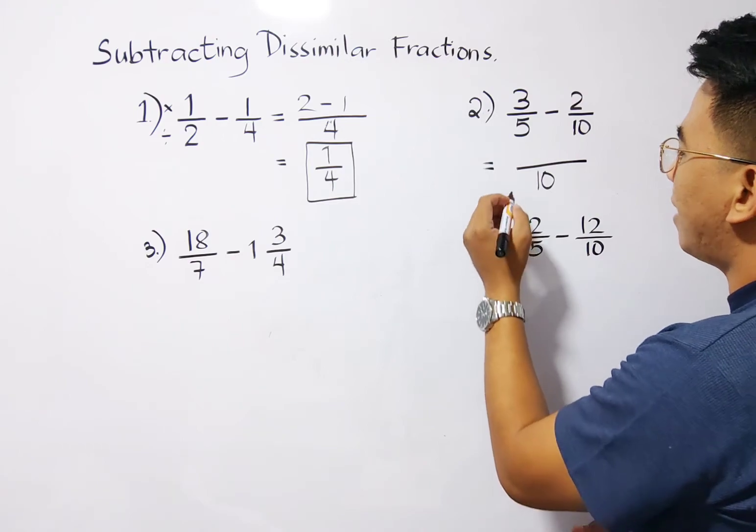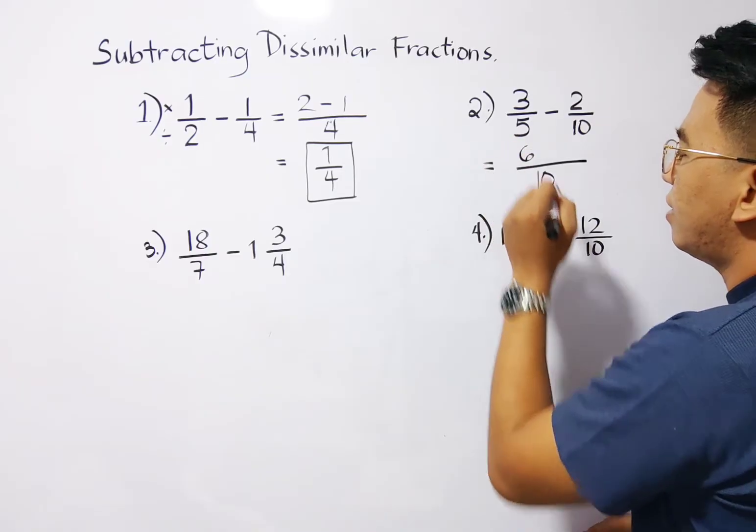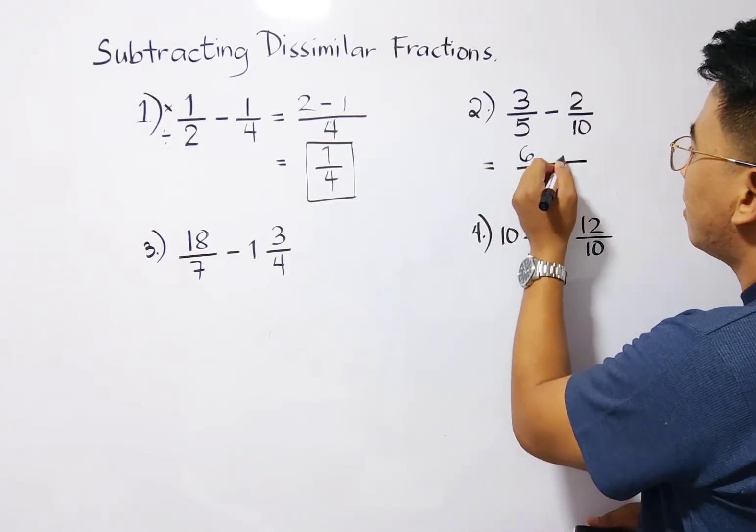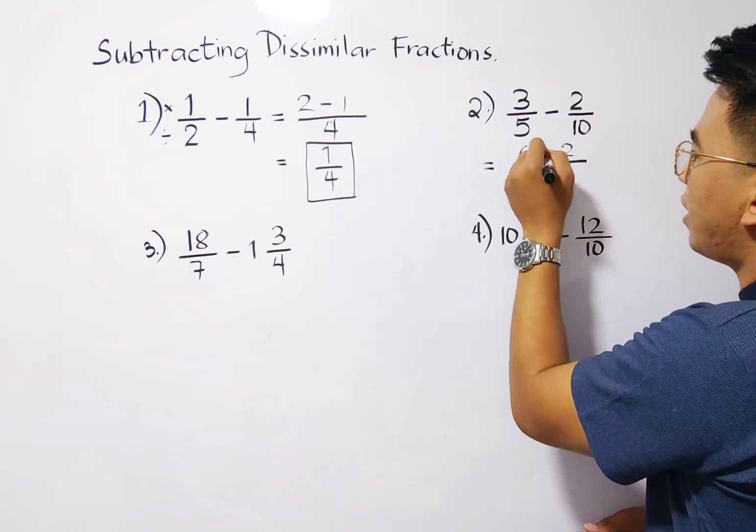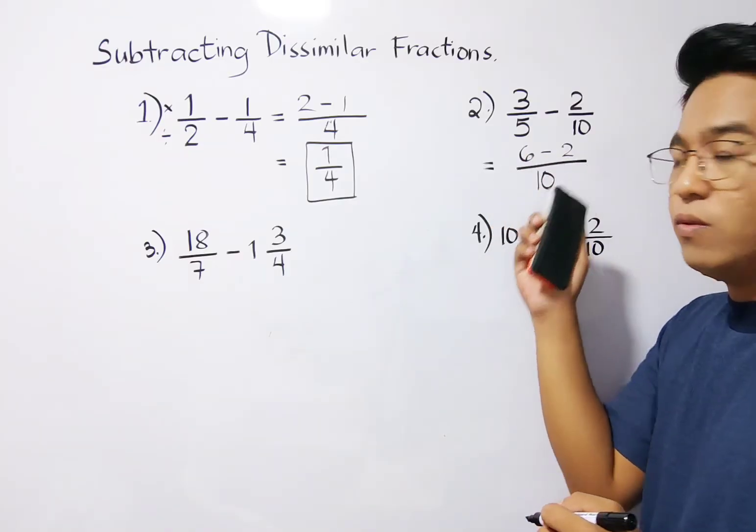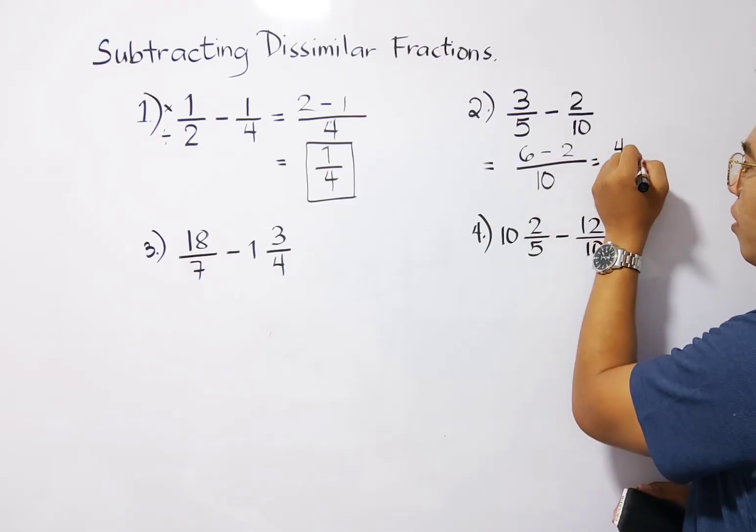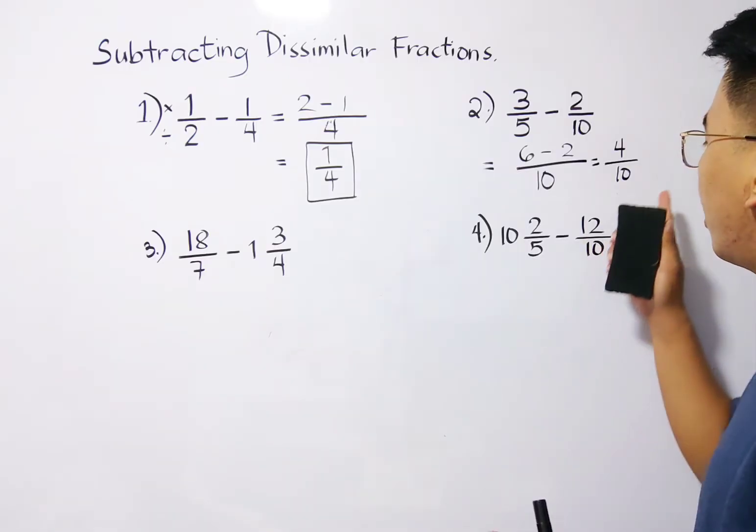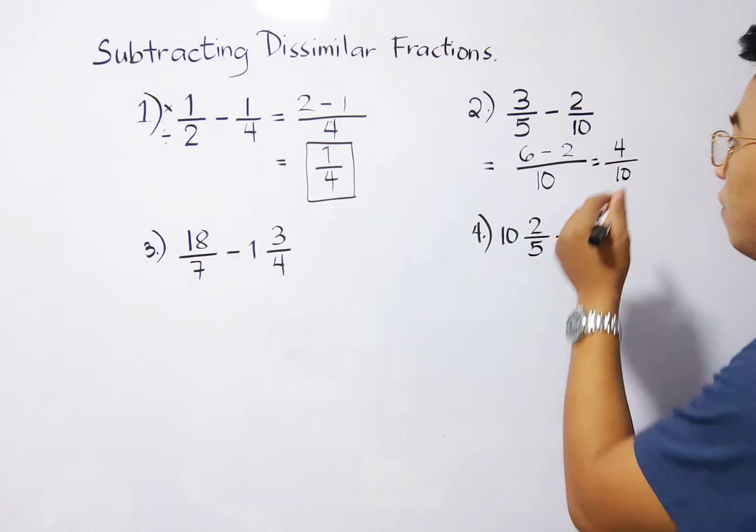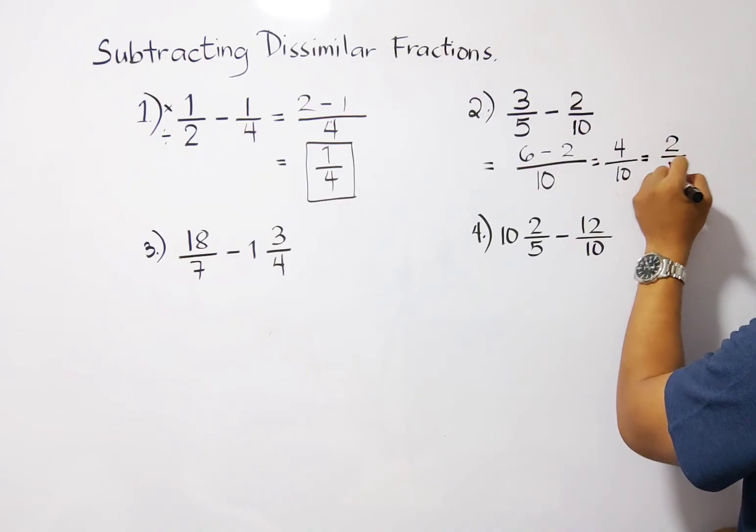So same process with number 1. 10 divided by 5, that would give us the answer of 2. 10 divided by 5 is 2, times 3, that is 6. Next, 10 divided by 10, which is 1, times 2, that is 2. So we will subtract it. 6 minus 2, that is 4. Then copy your denominator, which is 10. And 4 over 10 is not yet the final answer, because we still need to express this in lowest terms. 4 over 10 is also equivalent to 2 over 5. This is now the final answer for item number 2.